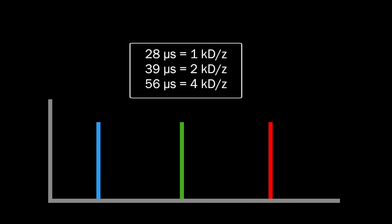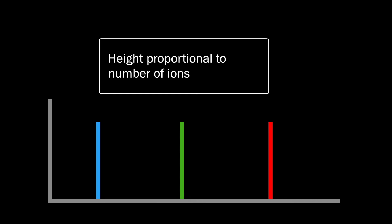From these times, and the known constant kinetic energy of the electric field, the spectrometer is able to calculate and record the mass-to-charge ratio of each ion it detects. Since MALDI ionization frequently produces ions with a single charge only, the mass spectrum will show the masses in daltons of the ions detected. The height of each peak is proportional to the number of ions detected within that mass group.